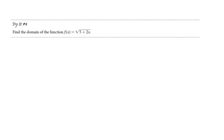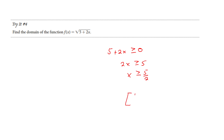Pause the video if you want to try. Give this one a shot. 5 plus 2x has to be greater than or equal to 0. You just divide this by 2 — we want x's to be greater than or equal to negative 5/2, which is just negative 2 and a half. So these are the possible values, the ones that are allowed. In interval notation, I want negative 5/2 and I'm going to go on forever. That's my domain.